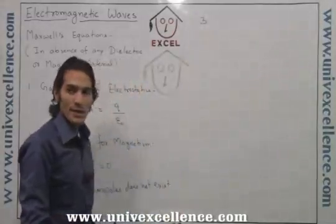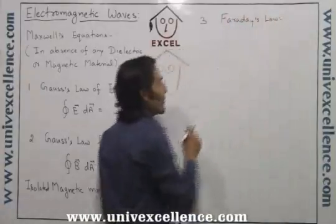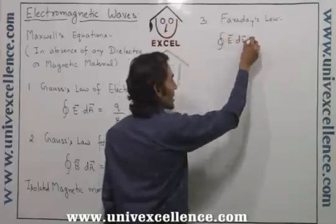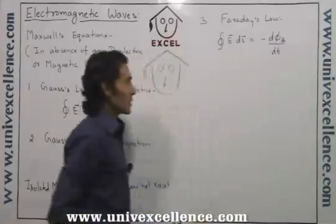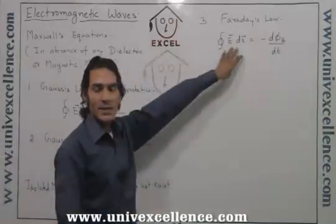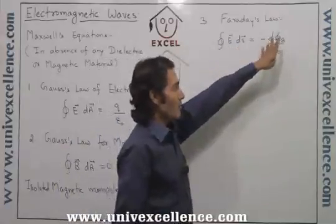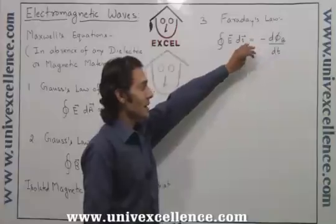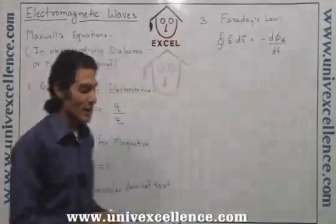The third Maxwell equation is Faraday's law of electromagnetic induction. The general form states that the line integral of the electric field over any closed path is equal to the negative of the rate of change of magnetic flux with respect to time. This line integral is also known as EMF, so the EMF induced in a closed loop equals negative of the rate of change of magnetic flux. This law describes the creation of an electric field by a changing magnetic field.